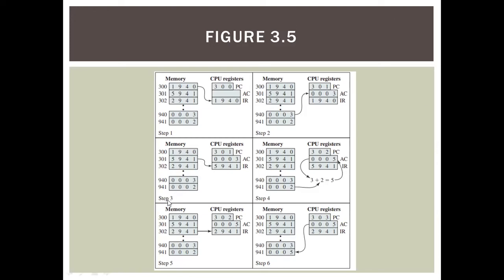We go to step 3. Here you can see the CPU register PC is 301. We focus on address 301, which contains the value 5941 — that is the value loaded into IR. Because the first number is 5, it means add, and 941 is the operand address. So we go to address 941, which contains 0002.